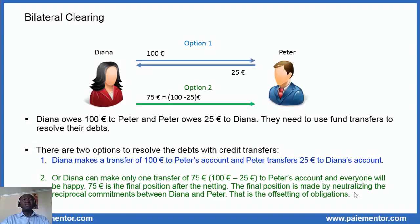Now let's consider an example to illustrate the definition and make things clearer. We will consider a bilateral clearing between two people that we call Diana and Peter. Diana owes 100 euro to Peter and Peter owes 25 euro to Diana. They need to use fund transfers to resolve their debts because they live far away and funds should be available to the creditor as soon as possible.